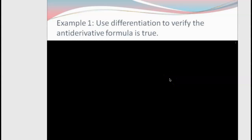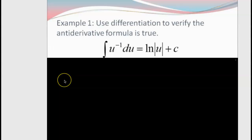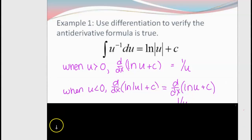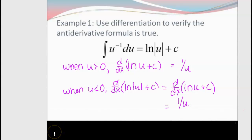We can use differentiation to anti-differentiate — that's what we saw with the Fundamental Theorem of Calculus. If we had an integral such as U to the negative 1, we memorized that that was the natural log of U. We knew that because the derivative of ln(U) equals 1 over U. This only works when the value of U is greater than zero — that's why there are absolute values — because you cannot take the natural log of a negative value. Derivatives and anti-derivatives are inverses of each other.